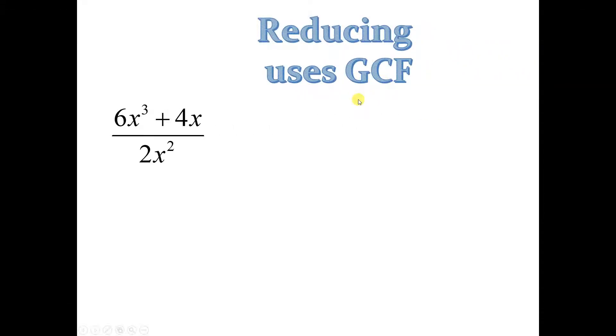Reducing uses the greatest common factor. We need to find the greatest common factor of all of these terms. We have two terms on the top and one on the bottom. In order to be able to reduce, all of the terms must share a common factor.